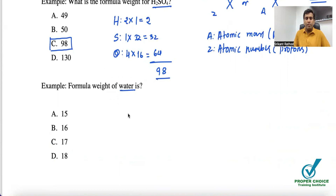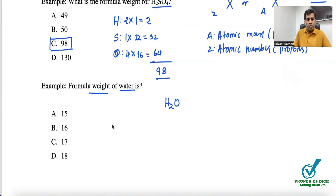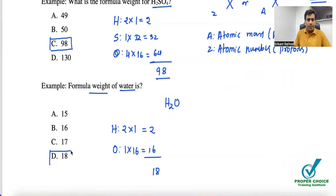Let's take one more example: the formula weight of water. The question doesn't give the molecular formula, but we should know that water is H₂O. The water molecule is composed of two hydrogens and one oxygen. Two hydrogen atoms: 2 × 1 = 2. One oxygen atom: 1 × 16 = 16. So the total formula weight of water is 2 + 16 = 18, corresponding to option D.